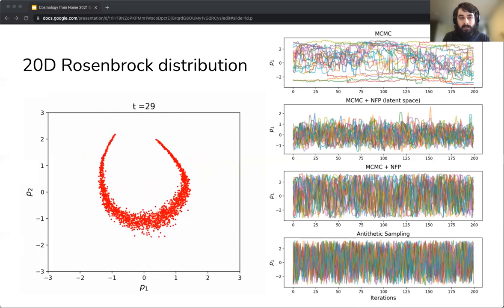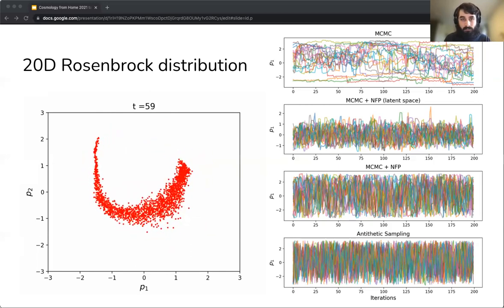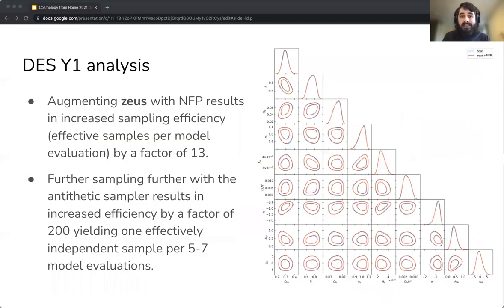We then applied the same methods to a real-world application. In particular, we used the DES Year One Analysis Pipeline, which includes 27 free parameters. By preconditioning the sampler, we used Zeus in this case too, we increased the sampling efficiency by a factor of more than 13, and by using antithetic sampling by a factor of more than 200 times compared to the standard case. This means that it only costs 5 to 7 model evaluations on average to get an independent sample instead of thousands of evaluations that we often need for this posterior distribution.